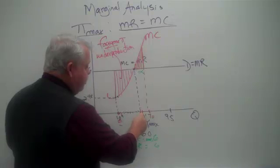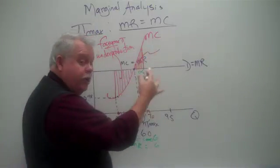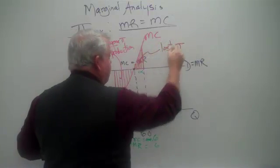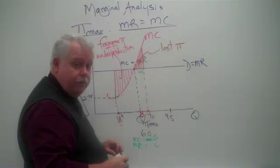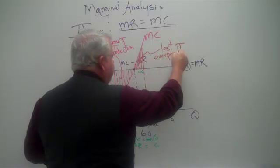So if you go past unit number 60 up to unit number 70, all of this represents, the shaded area represents lost profit caused by what? Overproduction. You're producing too many.